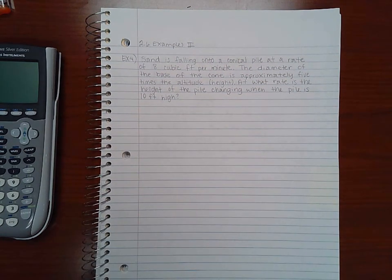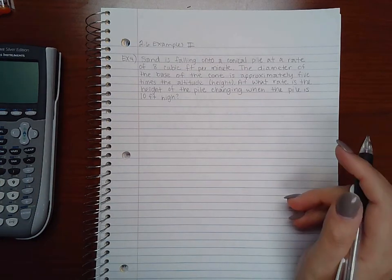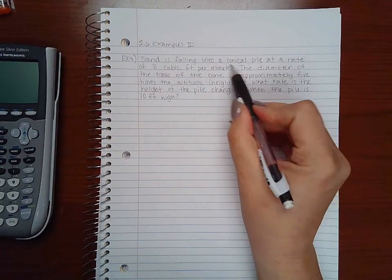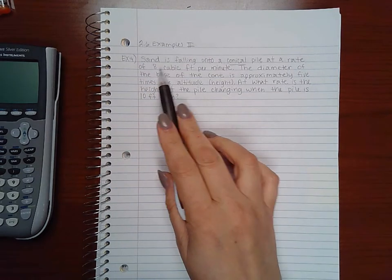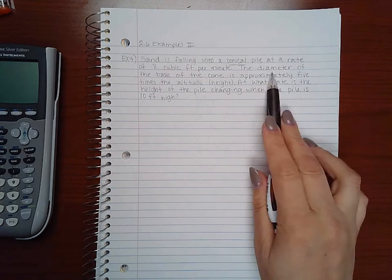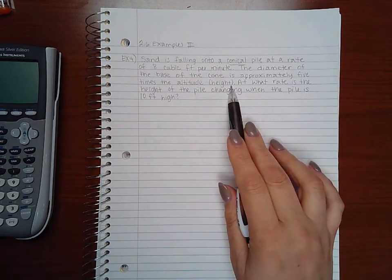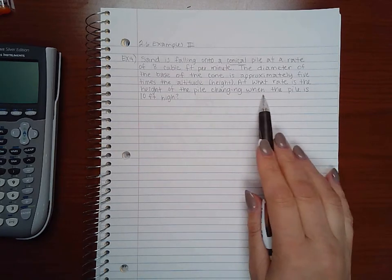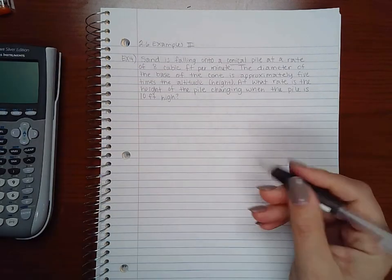Okay, this is the last section of our examples for this section. It says sand is falling onto a conical pile at a rate of 8 cubic centimeters per foot. The diameter of the base of the cone is approximately five times the altitude. At what rate is the height of the pile changing when the pile is 10 feet high?